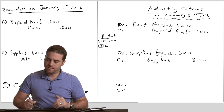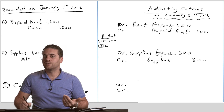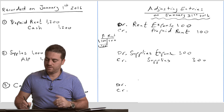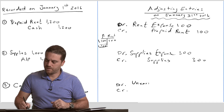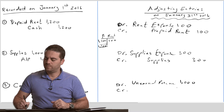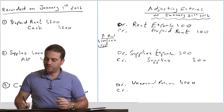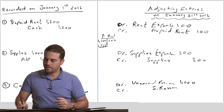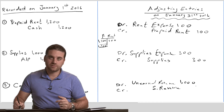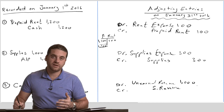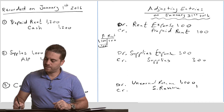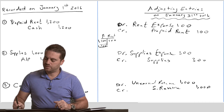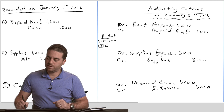We're going to debit unearned revenue because it's a liability account and it decreases with a debit. If a liability goes up with a credit, then it goes down with a debit. So debit unearned revenue for $1,000 — remember, we only record the changes. We're transferring the $1,000 from unearned revenue to a service revenue account, which is an income statement account. Revenue goes up with a credit, so credit service revenue $1,000.